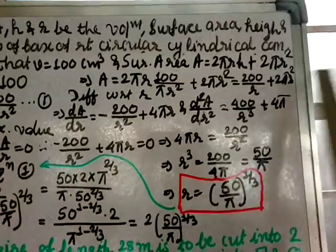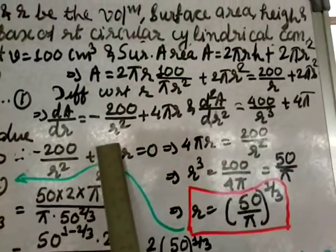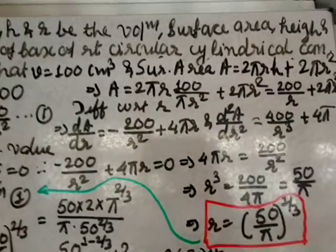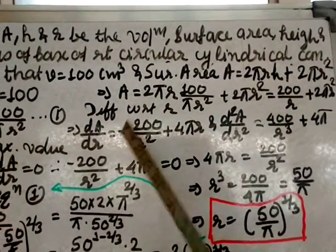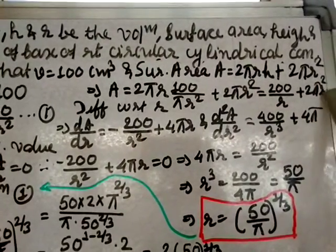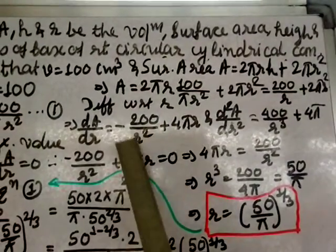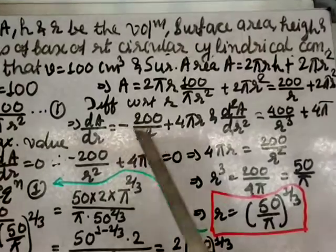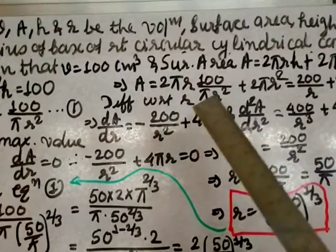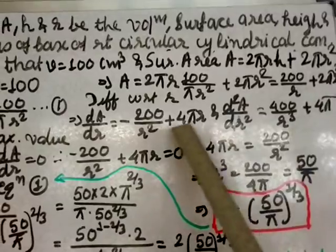After cancellation: A = 200/r + 2πr squared. Now differentiating with respect to r: dA/dr = minus 200/r squared + 4πr. For the second derivative: d²A/dr² = 400/r cubed + 4π, which is positive, confirming minimum surface area.